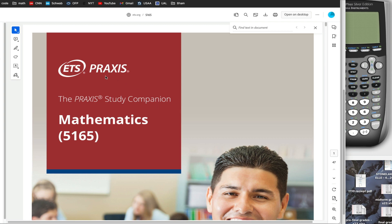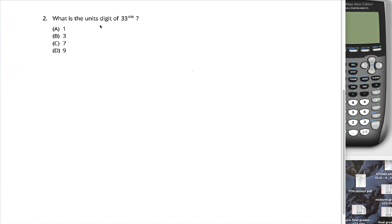All right, problem two of the practice problems in this Praxis Study Companion book asks you, what's the unit's digit of 33 to the 408th power? I got a calculator. Why don't I just figure out what 33 to the 408th power is? Well, you can't do that because if you try plugging that into a calculator, you'll get some scientific notation or an overflow error. This is some huge number and you can't calculate it directly. So how do I figure it out?